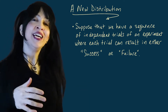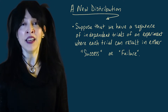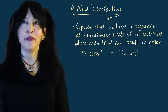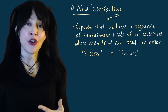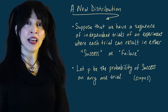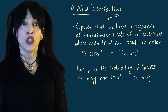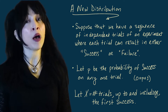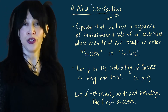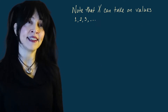Let's talk about another distribution. Suppose I have a sequence of independent trials of an experiment, where each trial has one of two possible outcomes — I'll call them success or failure. It could be heads and tails, making a basket or not — any yes/no success/failure scenario. I'll let p be the parameter representing the probability of success on any one trial, and I define random variable capital X to be the number of trials up to and including the first success.